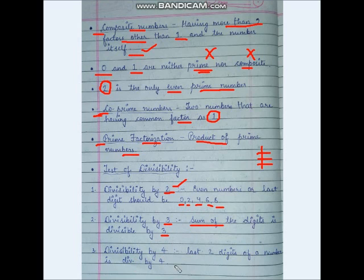Divisibility by 4: to check divisibility by 4, we look at the last 2 digits of the number and check if they are divisible by 4. If the last 2 digits are completely divisible by 4, then the whole number is also divisible by 4.